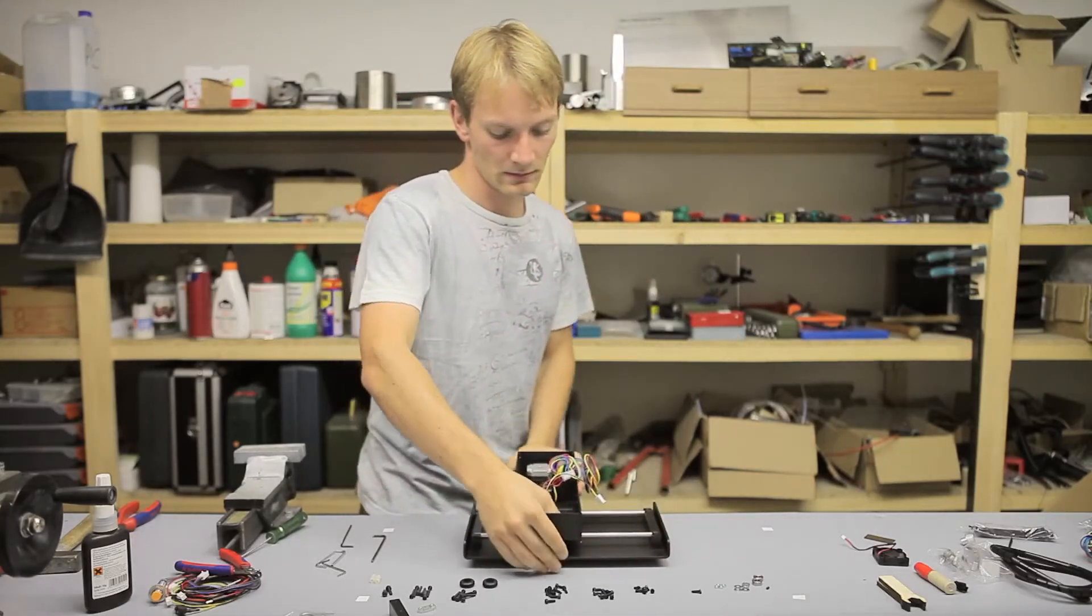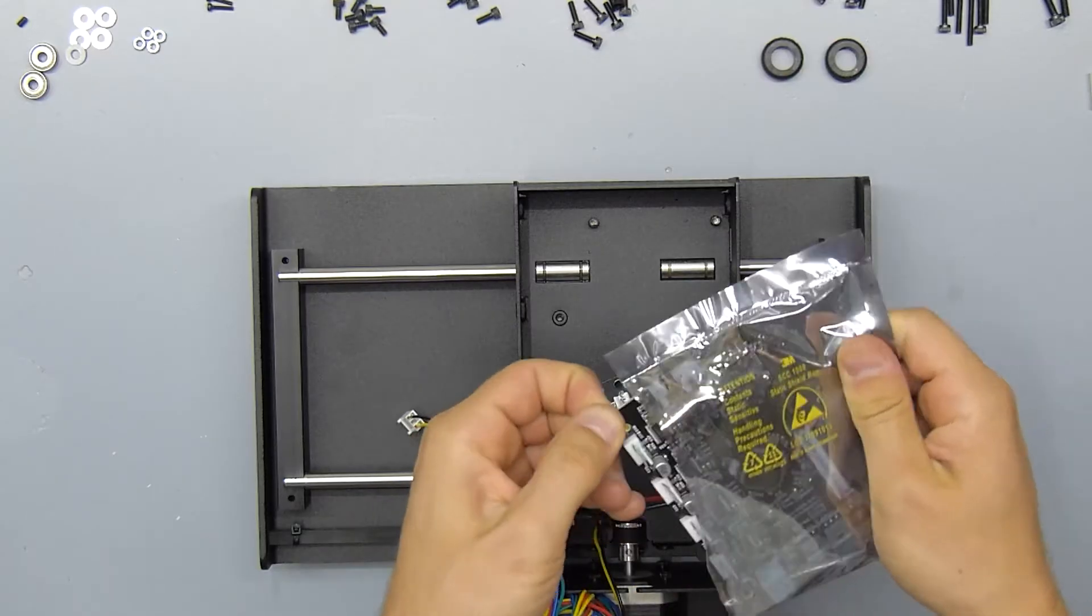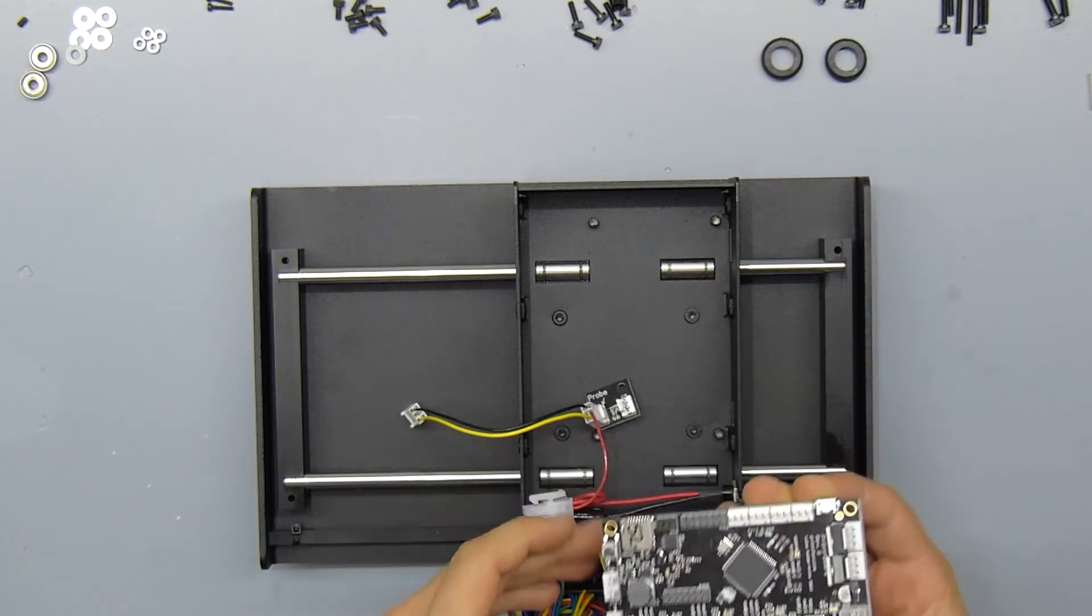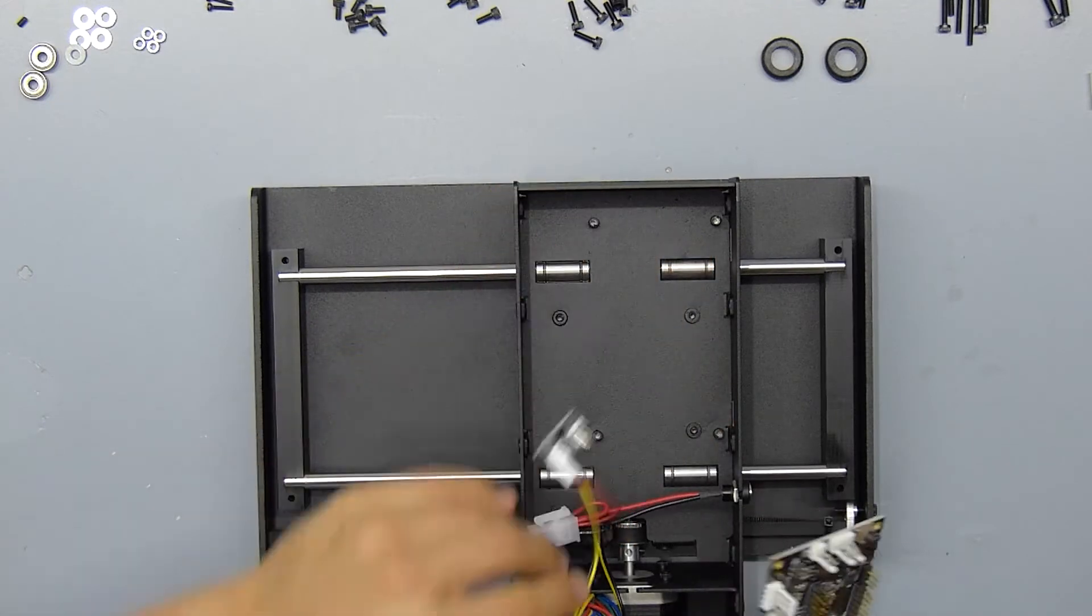Next up we're going to install the printer's main board. As with every other printed circuit board, try to only touch the circuit board on its corners. Use the microSD slot and the USB port to align the board with the cutouts on the printer's base.